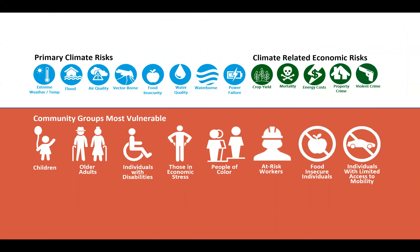These changes do have risks — both physical risks as well as risks to our population. There are well-established groups of vulnerable populations. The primary climate risks include things like extreme heat and weather, flooding, air quality considerations, vector-borne disease, food security, water quality, waterborne illness, and power or infrastructure failure. There are also related economic risks including crop yield impacts, mortality considerations, energy costs, and property or violent crime — all of which have linkages to climate change projections. We have well-established groups of vulnerability, and they're all outlined in the document.